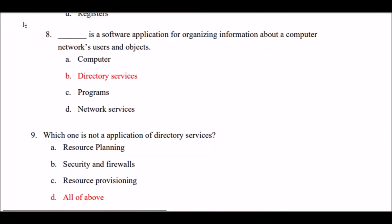Next question: Blank space is a software application for organizing information about a computer network, users, and objects. Option A: computer. Option B: directory services. Option C: programs. Option D: network services. The right answer is Option B — directory services is a software application for organizing information about a computer network, users, and objects.